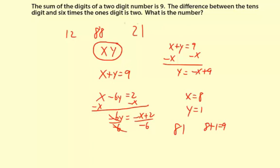And then the difference between the 10's and 6 times the 1's is 2. So 8 minus 6 times 1 should equal 2. Well, 6 times 1 is 6, so 8 minus 6 does equal 2. This number satisfies both constraints, so 81 is our unknown number.